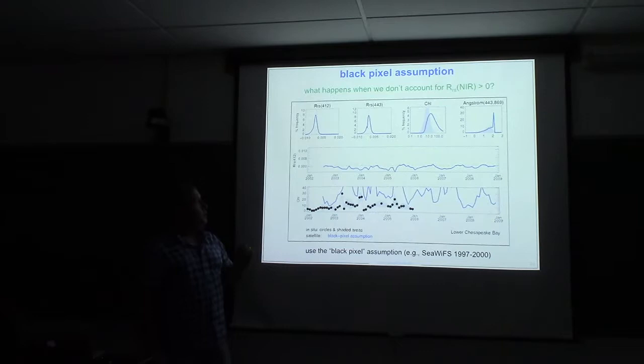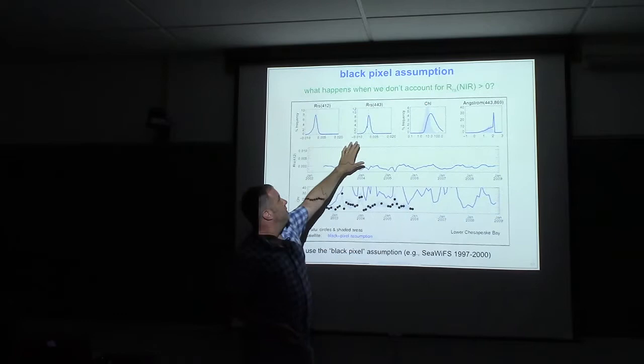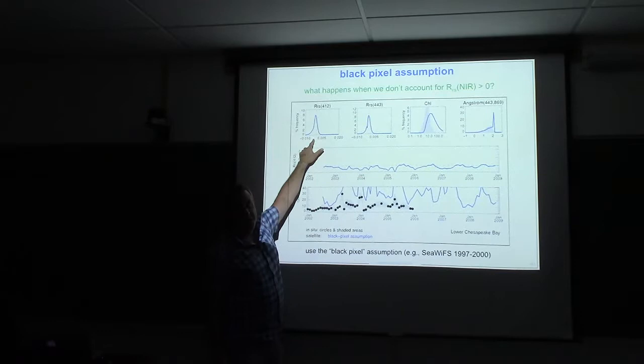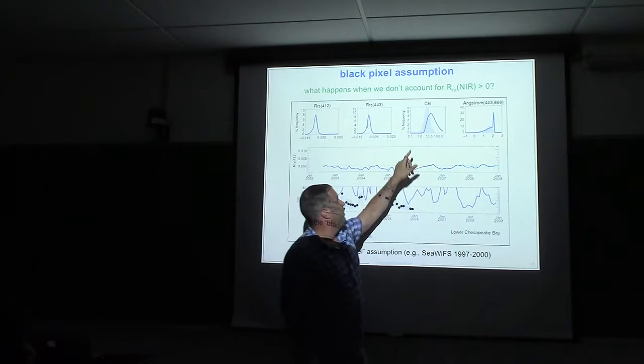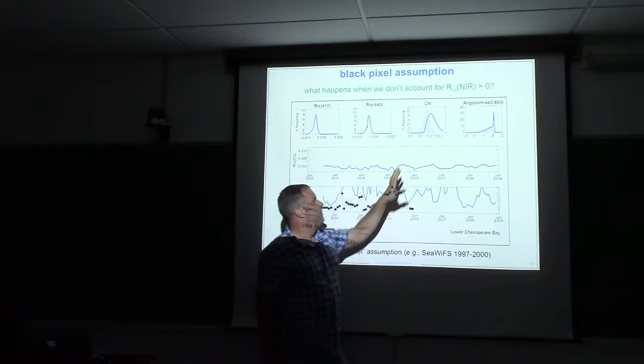So if you're in a place like Chesapeake Bay, and this is a time series of data in the bottom half of Chesapeake Bay, which is the clearest part of that region, if you don't account for the fact that your assumption is not valid, you start over-correcting. And that leads into negative values in the visible. And so what you're looking at here are frequency distributions at two different wavelengths, 412 and 443, of just all retrievals in the lower bay. And you can see that we're getting a ton of negative retrievals here.